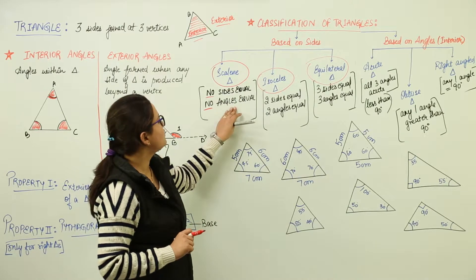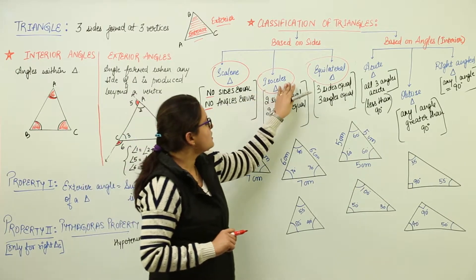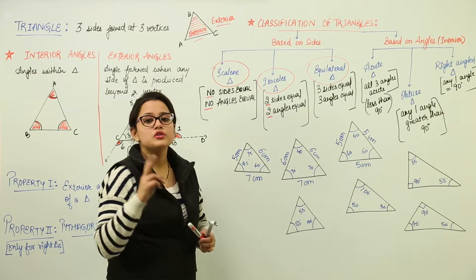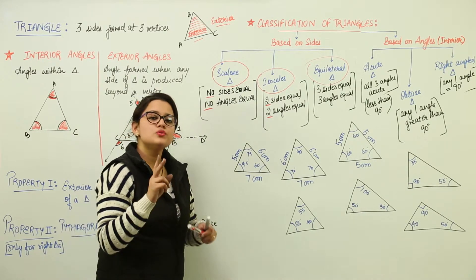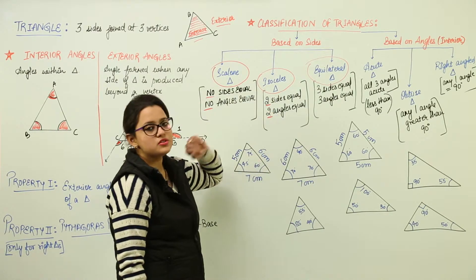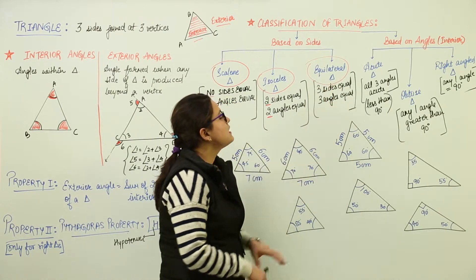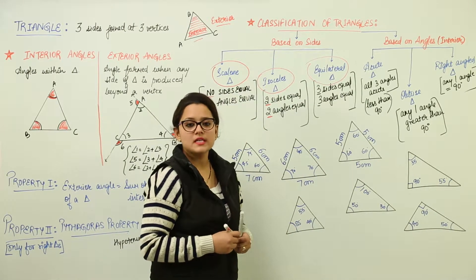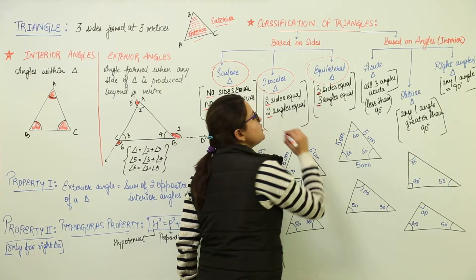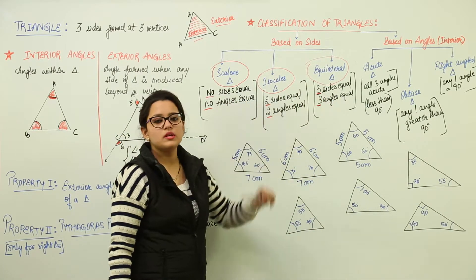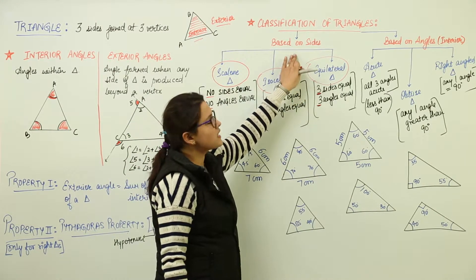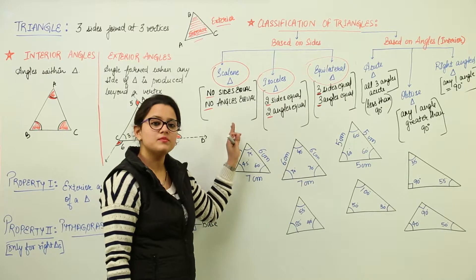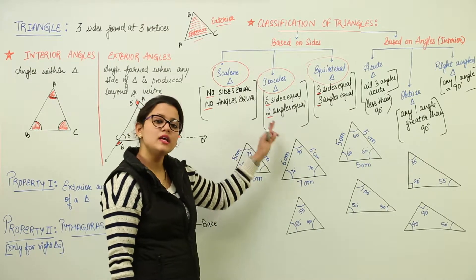An isosceles triangle has two sides equal and two angles equal — out of the three angles, two are the same, and two sides have the same measurement. An equilateral triangle has all three sides equal and all three angles equal. So the classification based on sides gives us three types: scalene, isosceles, and equilateral triangles.